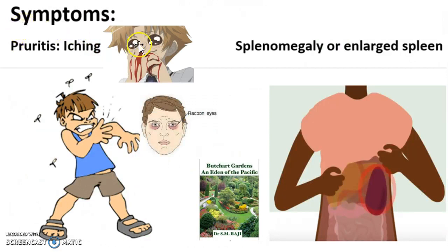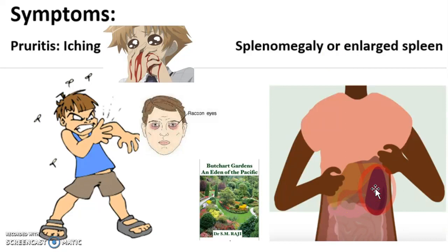In terms of symptoms, you're looking at pruritus — an itch especially after showering — nosebleeds, splenomegaly which is an enlarged spleen sometimes up to three times its normal size, and ecchymosis, which is a predisposition to developing bruises. For example, a person with polycythemia who bumps into a doorknob is more likely to develop an enlarged bruise.